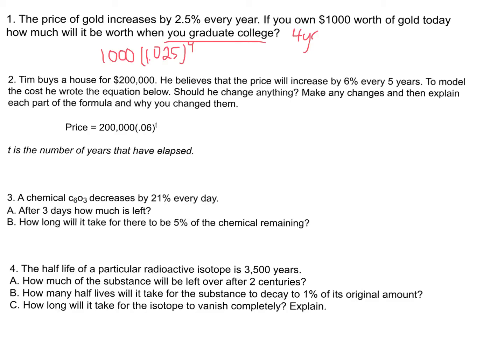For number two, we want to see if an equation makes sense, going through it step by step. A house costs $200,000 and we want to know if the equation predicts upcoming prices, given it increases by 6% every five years. Think about what would happen after one year — you'd take $200,000 and multiply it not by 0.06, but by 1.06, because the 1 keeps the original $200,000 and multiplying by 0.06 adds the 6%. The variable t represents the number of years that have elapsed.